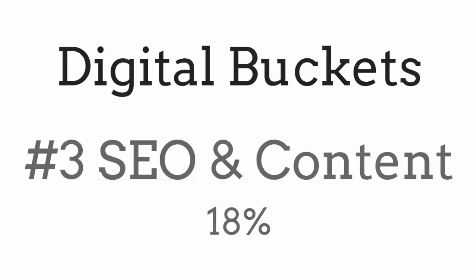The third bucket is online currency — that's content and search engine optimization. Most of your visitors over the long term will come through organic search, so you have to invest in this. It's quite a sizable portion — about 18 percent of the total online marketing budget — going towards creating content, optimizing it, and making sure search engines can find it and present it to your target market.